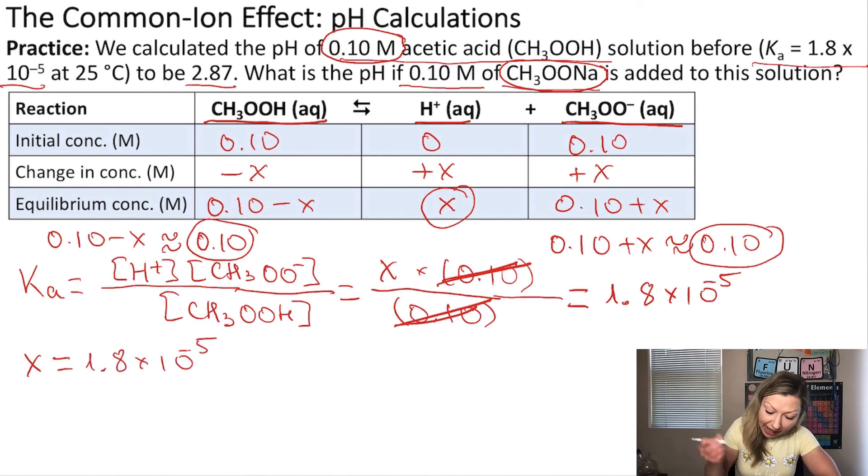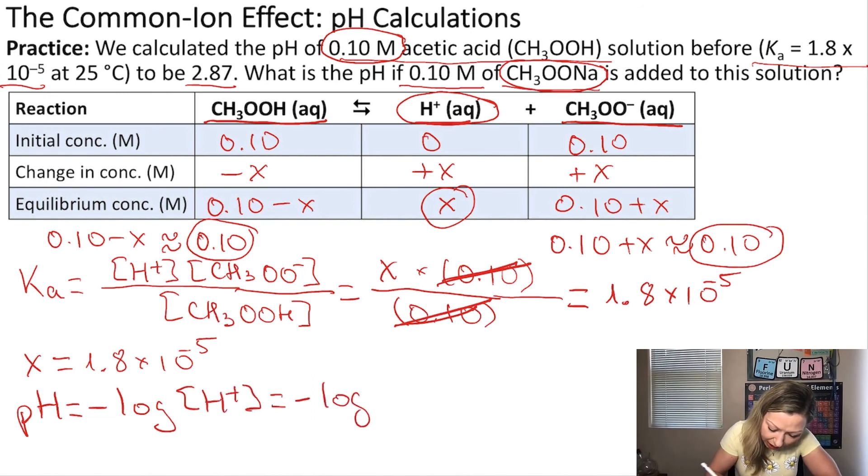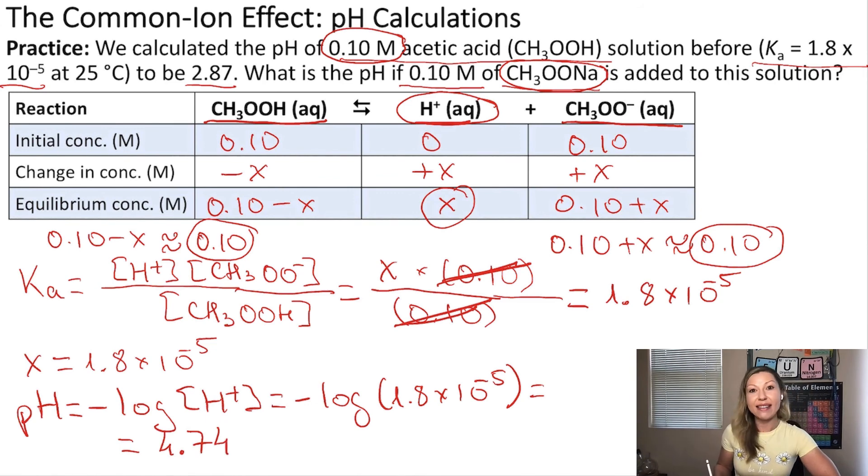And because my X is actually the H+ ion concentration, now I can calculate the pH. So the pH equals negative log of H+ ion concentration, which equals minus log of 1.8 times 10 to the negative 5. And if you plug this into a calculator, you are going to get 4.74 as your pH.